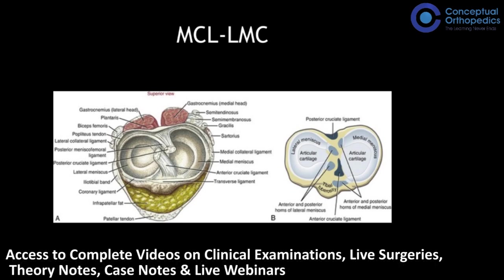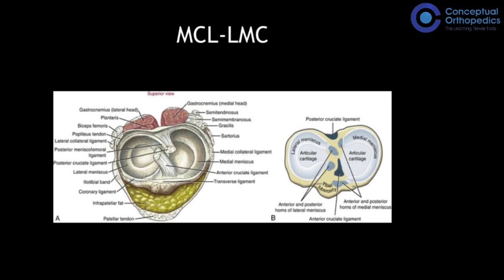On an X-ray showing the tibial spine or intercondylar area on the upper end of the tibia, you may be asked what structures go from anterior to posterior. Remember: first is the anterior horn of the medial meniscus, then the ACL, then the anterior horn of the lateral meniscus, then the posterior horn of the lateral meniscus, then the posterior horn of the medial meniscus, and the most posterior element is the posterior cruciate ligament.